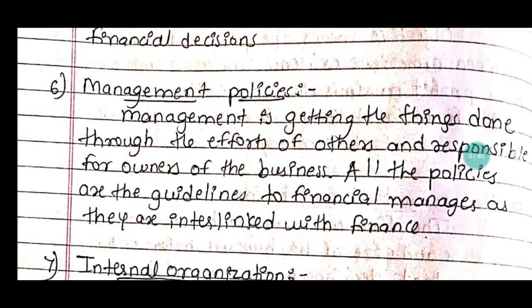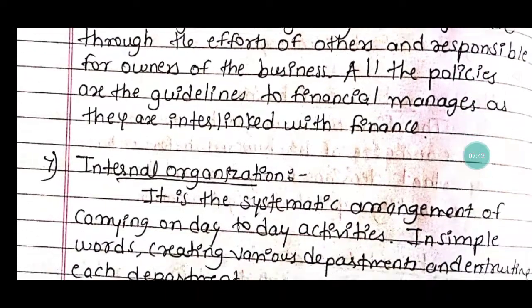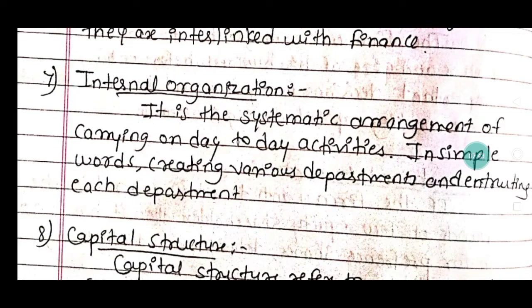The seventh internal factor is internal organization. What is internal organization? It is a systematic arrangement for carrying on day-to-day activities. In simple words, it involves creating various departments within the business. The finance manager has to consider the structure and functioning of these departments when making financial decisions.